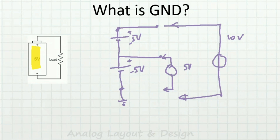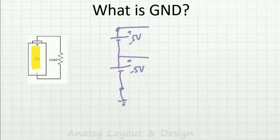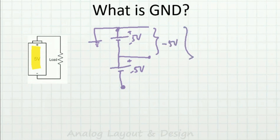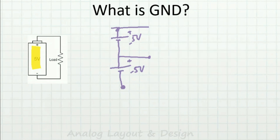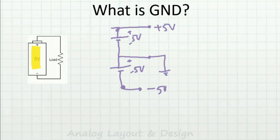In the same circuit, if I change the ground to the top terminal instead, then this voltage will be minus 5 volts and the other will be minus 10 volts. And if I ground the center point between the two cells, one terminal reads plus 5 volts and the other reads minus 5 volts — that is a voltage rise on one side and a voltage drop on the other.